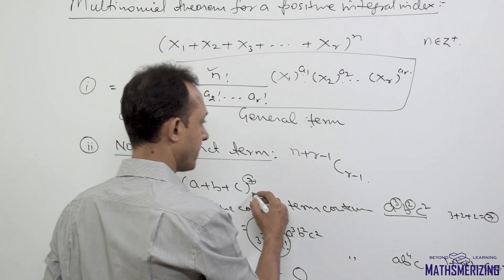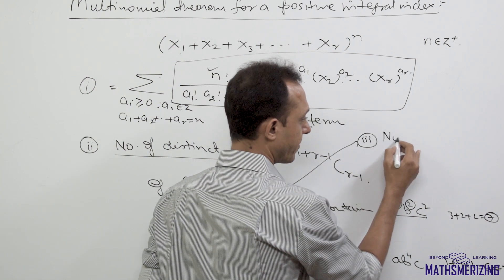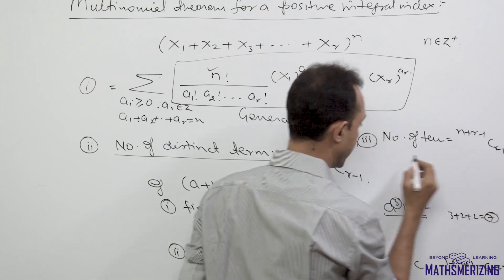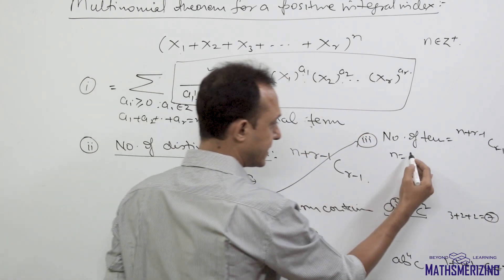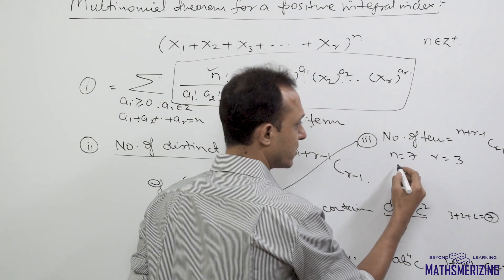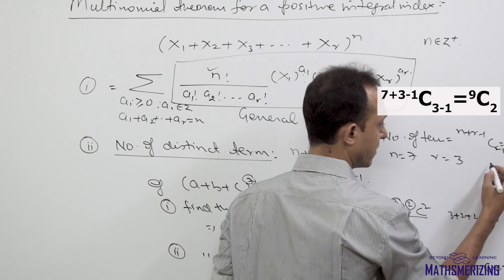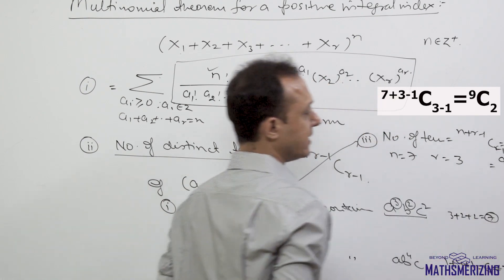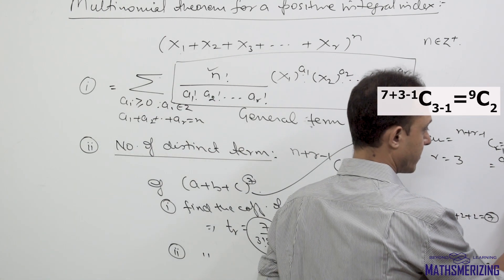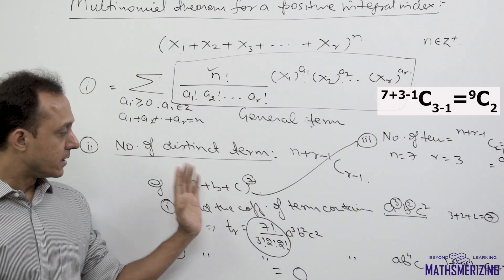The third question: find the number of terms in the expansion of a plus b plus c to the power 7. The number of terms is given by n plus r minus 1 C r minus 1. Here n is 7 and r, the number of variables, is 3. So number of terms is 7 plus 3 minus 1 C 3 minus 1, which is 9C2, giving 36 distinct terms in the expansion.